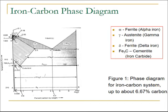In this slide I have shown the iron-carbon phase diagram which includes various phases such as alpha phase i.e. ferrite, gamma phase i.e. austenite, delta phase i.e. delta iron or ferrite, and Fe3C i.e. cementite. Cementite is also called as iron carbide. From the figure it is clear that the iron-carbon system shows a maximum solubility of carbon in iron as 6.67%.